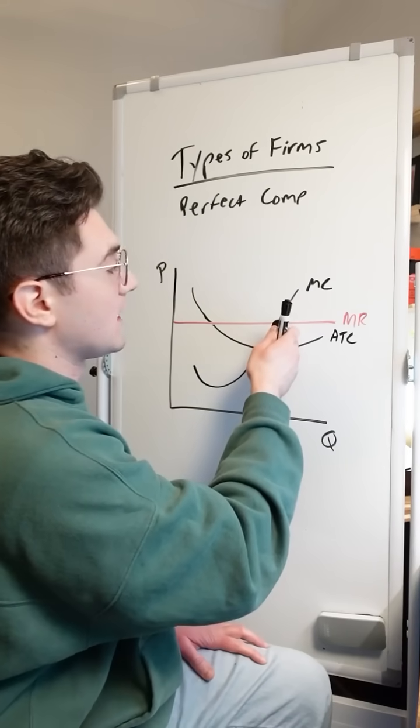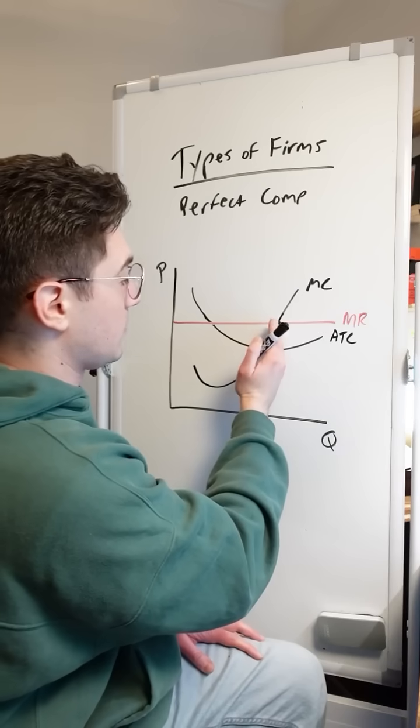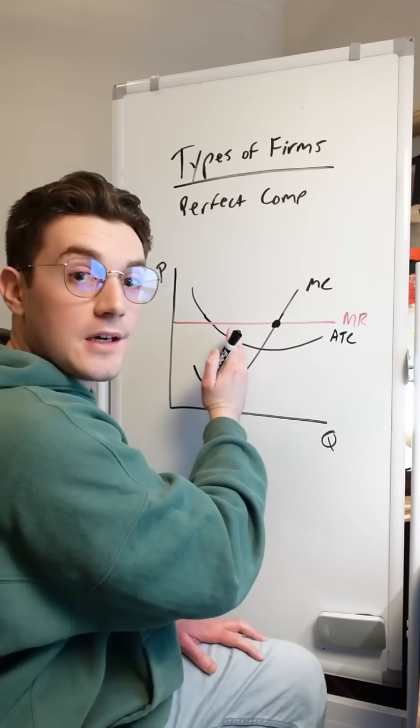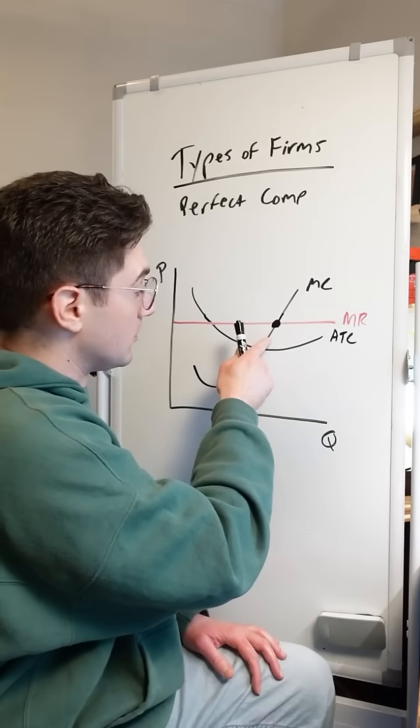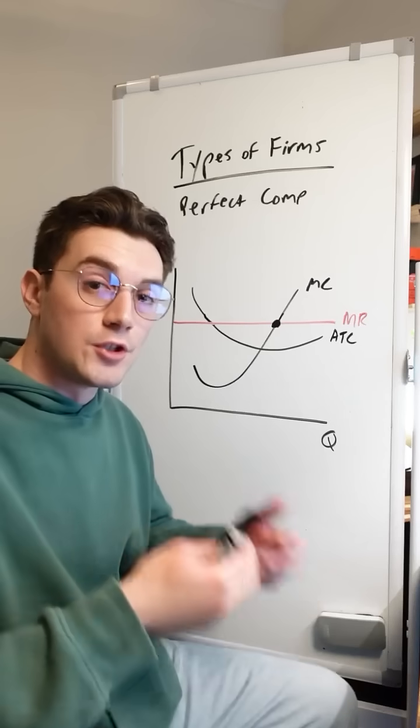The cost of that next unit is higher than the revenue from it. And at this point, if they were to produce anything to the left of it, they'd be leaving profit on the table because the cost of that next unit would be lower than the revenue they'd achieve from it.